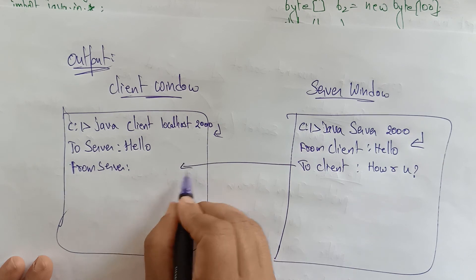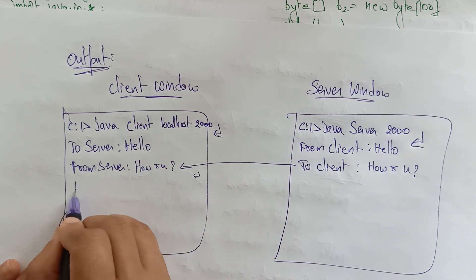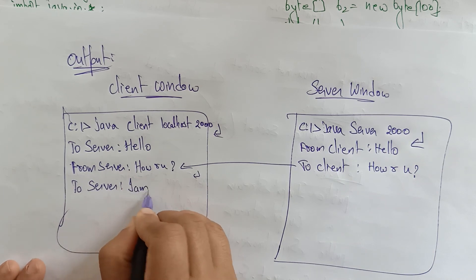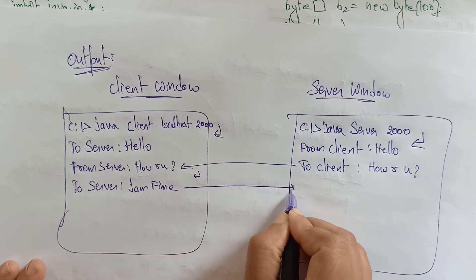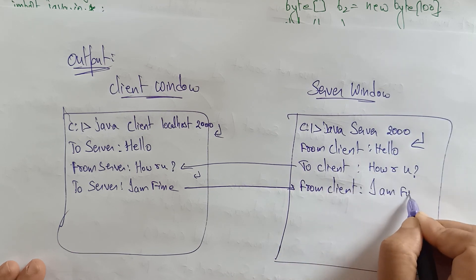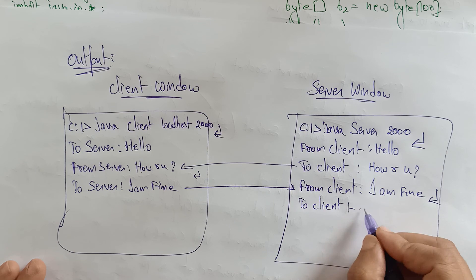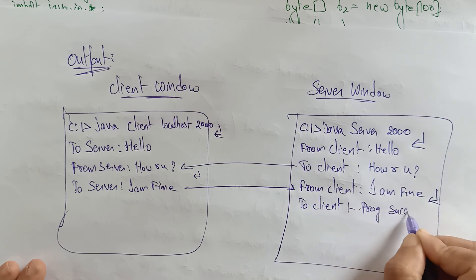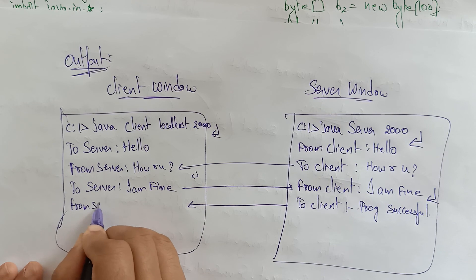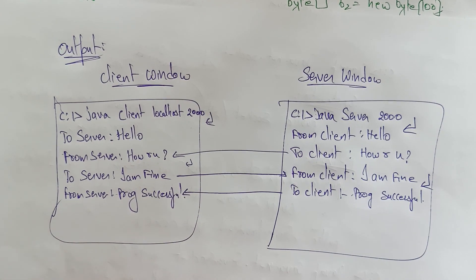The server types 'how are you' and this message is passed back to the client window, which displays 'From server: how are you'. Then back in the client window, 'To server:' appears again and the client types 'I'm fine'. This goes to the server, which displays 'From client: I'm fine'. The server then replies 'program successful', and the client displays 'From server: program successful'. This is how the output appears.